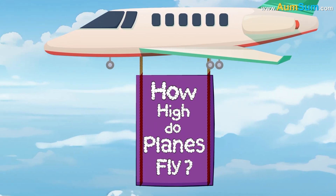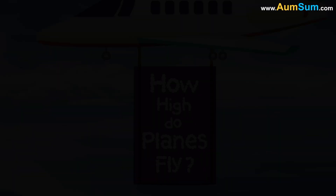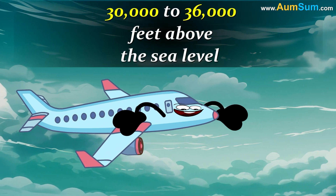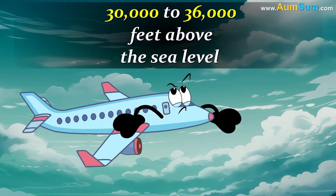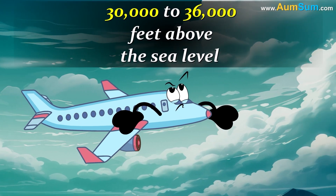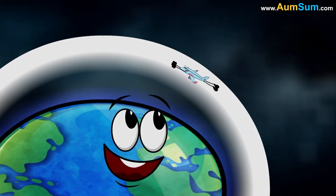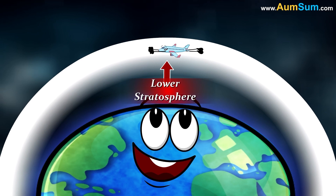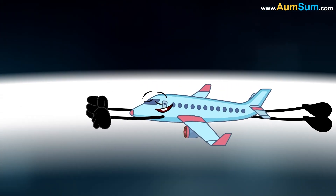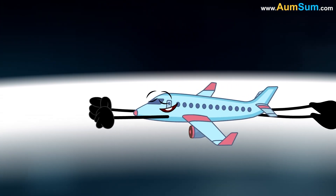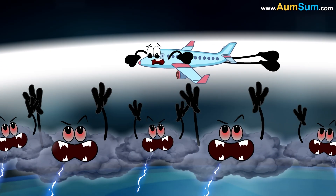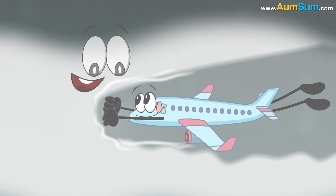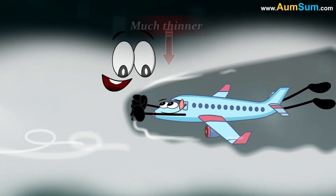How high do planes fly? Commercial airplanes fly at altitudes ranging between 30,000 to 36,000 feet above sea level. Firstly, flying at such an altitude places the airplane in the lower stratosphere of planet Earth. The lower stratosphere is located above the clouds, which helps protect the airplane against bad weather.